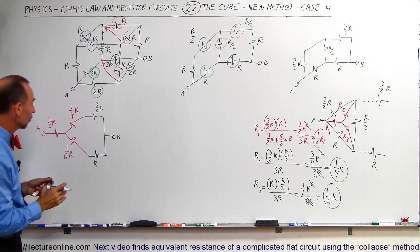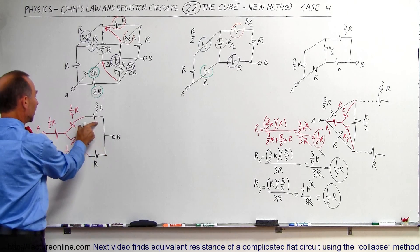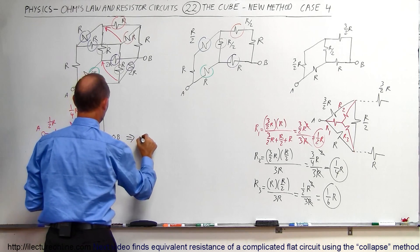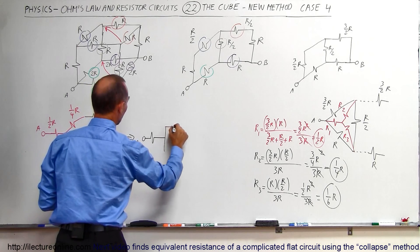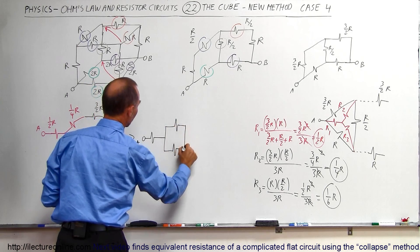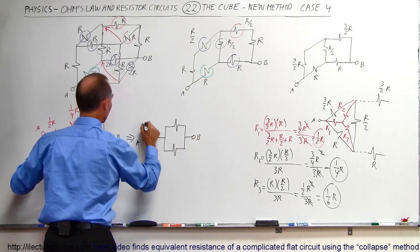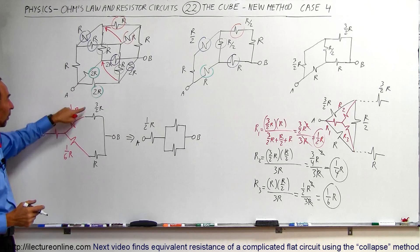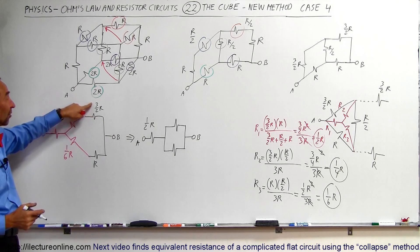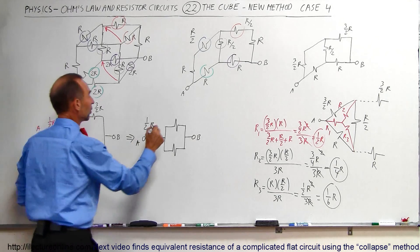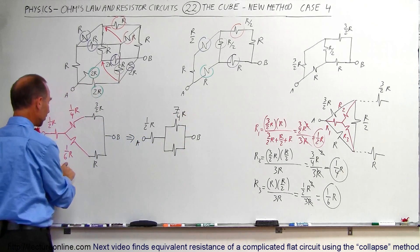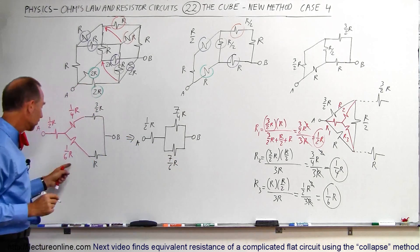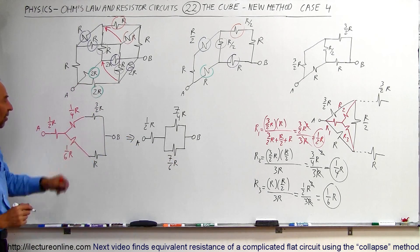Now we have something much easier to solve. We have two parallel branches, and we can combine the two resistors in the top and bottom branches. From A, the first resistor is 1/2 R. In the top branch, 1/4 + 6/4 = 7/4 R (since 3/2 is 6/4). In the bottom branch, 1/6 R + R = 7/6 R.